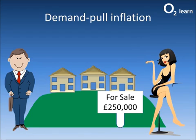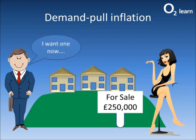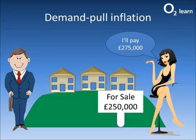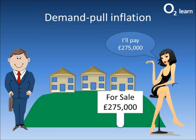Now let's look at the other type: demand pull inflation. Look at that lovely house — what a fantastic house — for sale at £250,000. This chap wants one. What do you think is going to happen when this lady starts to bid? She's happy to pay £275,000. And as you can see, the price has gone up to £275,000. This is something we call demand pull inflation.